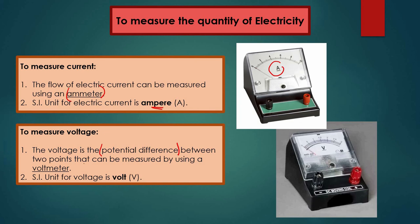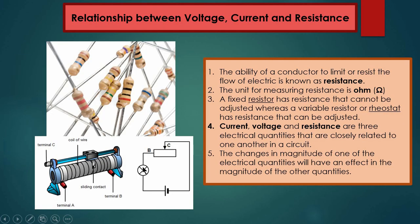To measure voltage — also known as potential difference — you require a voltmeter, symbol V, and the unit is volts. The ability of a conductor to limit or resist the flow of electricity is known as resistance, and its unit is ohm (Ω). A fixed resistor has a particular fixed resistance that cannot be changed, while a variable resistor allows you to change the resistance depending on the situation.